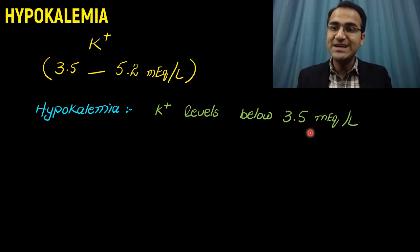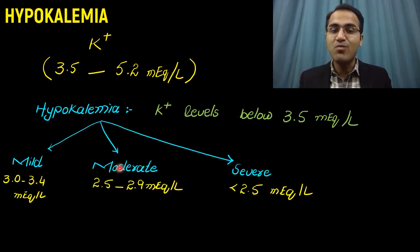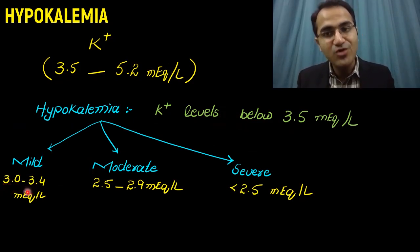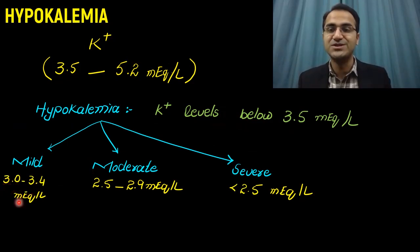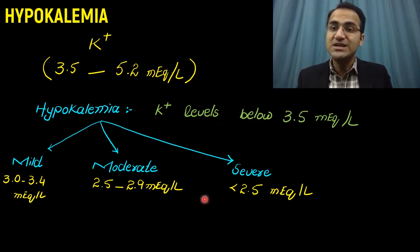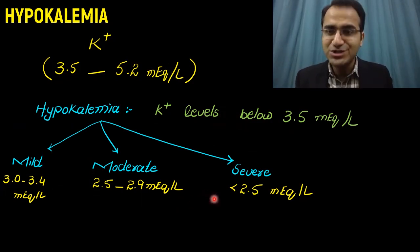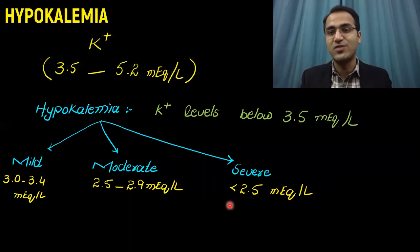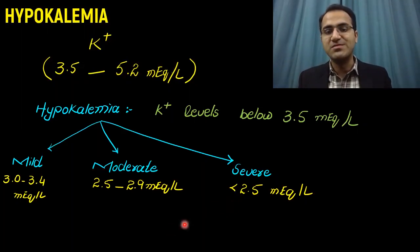We have three categories of hypokalemia: mild, moderate, and severe. In mild hypokalemia, potassium levels are from 3 to 3.4 mEq per liter. In moderate hypokalemia, levels are between 2.5 to 2.9 mEq per liter. In severe hypokalemia, potassium levels fall below 2.5 mEq per liter.